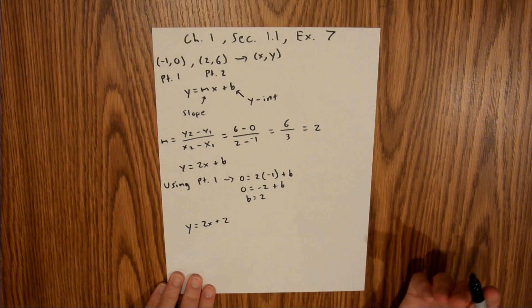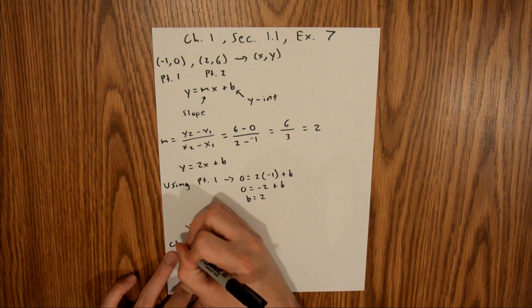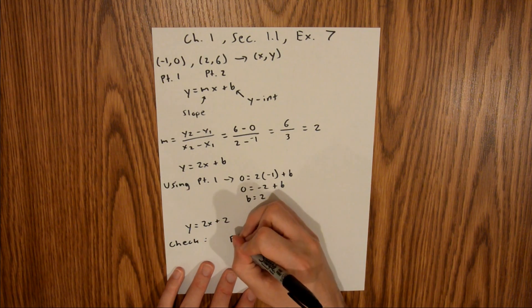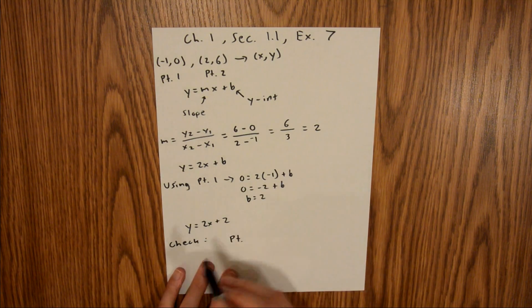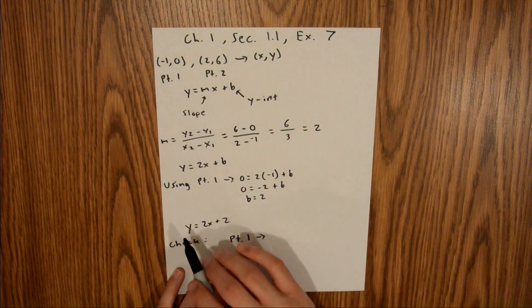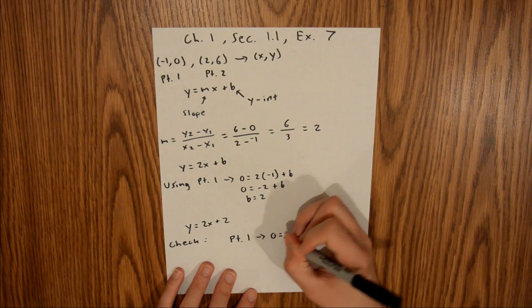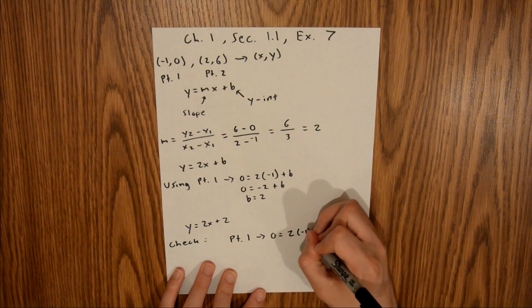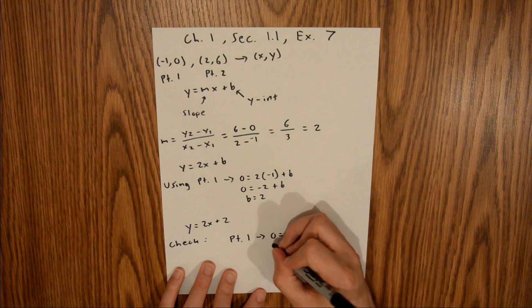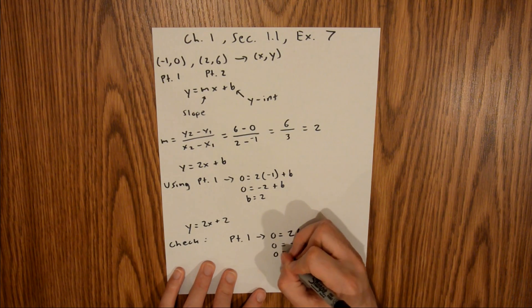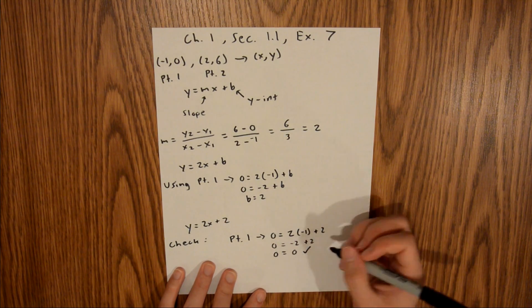Just to be sure this is correct, we can do a little check. We're going to plug in both of our points and check to see if both sides of the equation are satisfied. If we plug in point 1, your y-coordinate is 0. So 0 = 2 times your x-coordinate, which is -1, plus 2. Zero equals -2 + 2. Zero equals zero. That checks out.